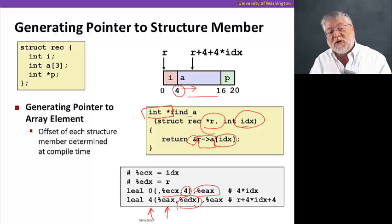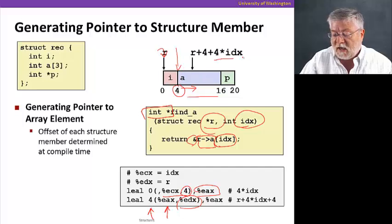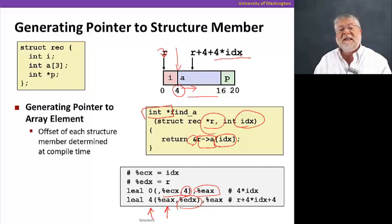We add all of those together. So we start from R, add on the four to get to the A portion of the struct, the array portion of the struct. And then we add on the four times the index to get to the right element inside the array.